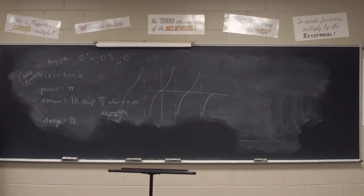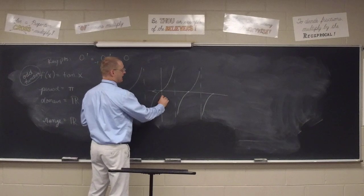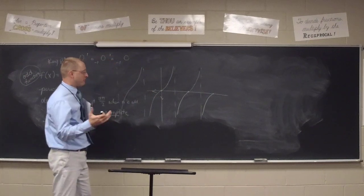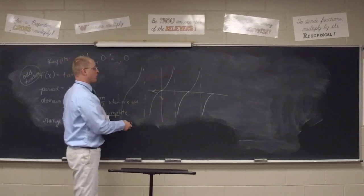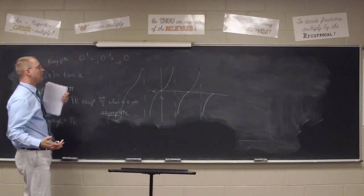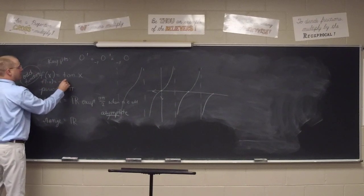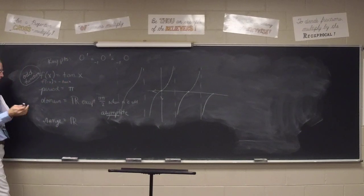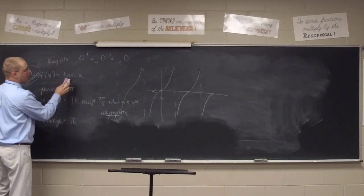Tangent is an odd function. If you go negatively on x, you also go negatively on y. Forward x goes upward, backward x goes downward. This means f(-x) = -tan(x). You don't have to write that down, but know that tangent is an odd function — that's important to point out.